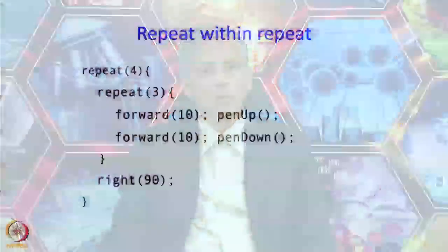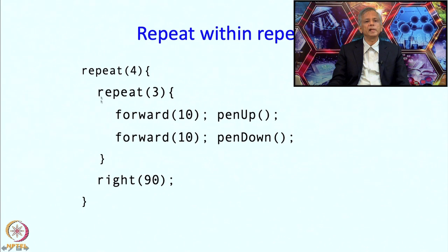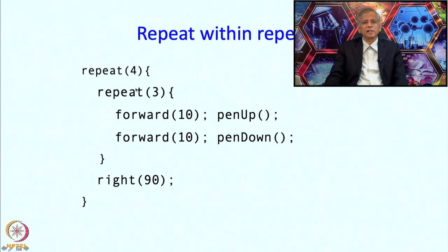We said the body of a repeat can itself contain a repeat statement. So here is an example: we have a repeat 4 and inside that there is a repeat 3 and a right(90) statement. The first rule is that whatever is inside the outer repeat is going to be executed 4 times. What is inside? There is a repeat 3 and a right(90). So we execute the repeat 3's body 3 times, then execute right(90) once, then go back and do this 4 times total. There is no real mystery as such.